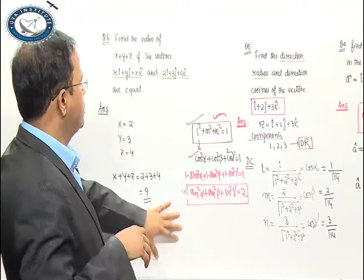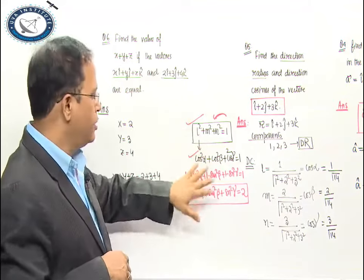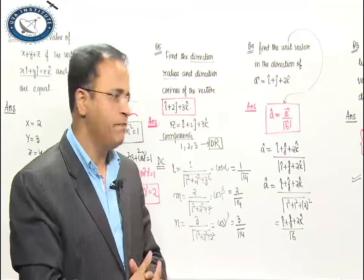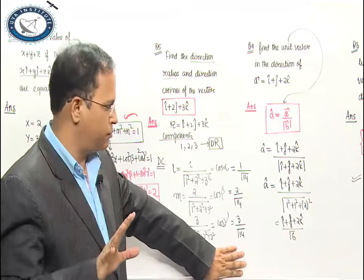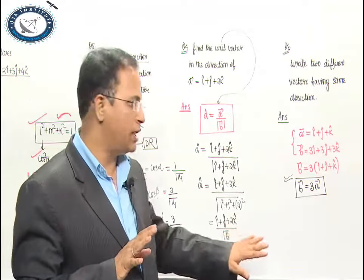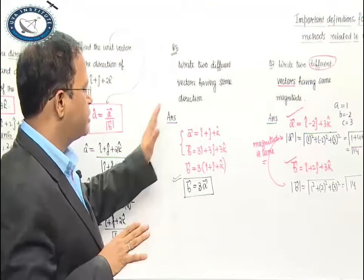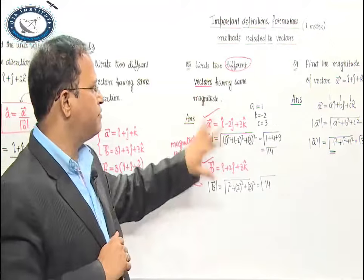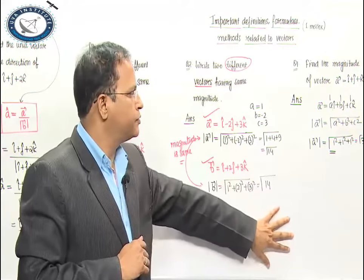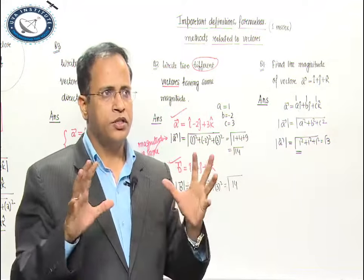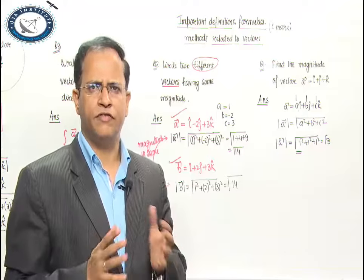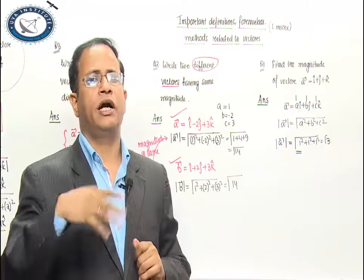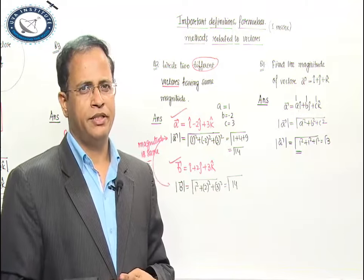So what have we discussed? We discussed equal vectors, where the components are always equal when two vectors are equal. We discussed direction ratios and direction cosines. We discussed two different vectors having the same magnitude, and two different vectors having the same direction — parallel or collinear vectors. These five or six terms are most commonly used in vectors. Go through them, understand them — this will be very helpful for solving higher-level problems. With this I end the session, thank you, God bless you.